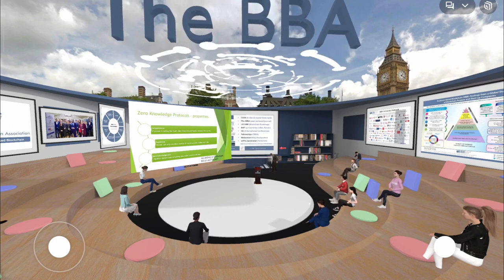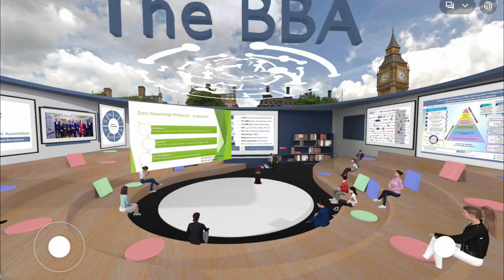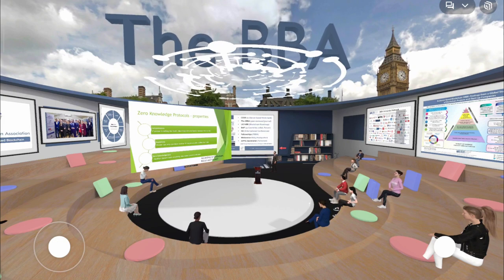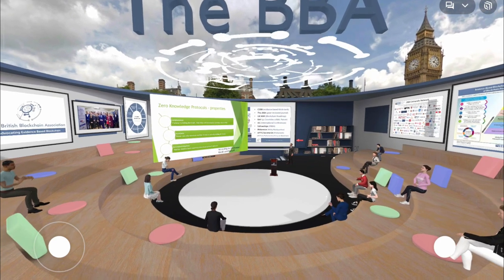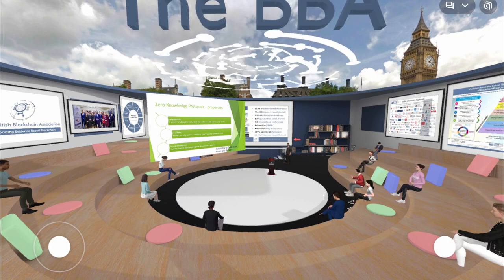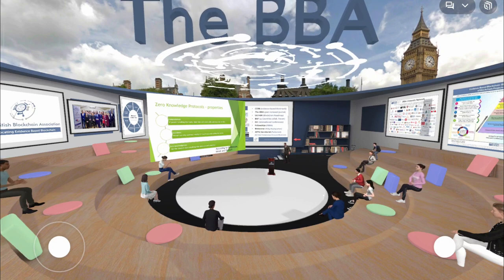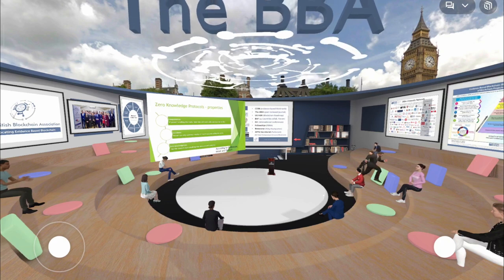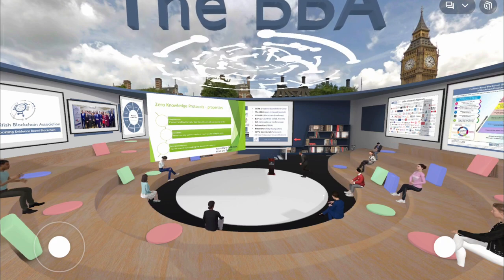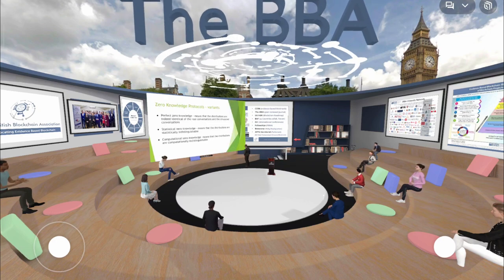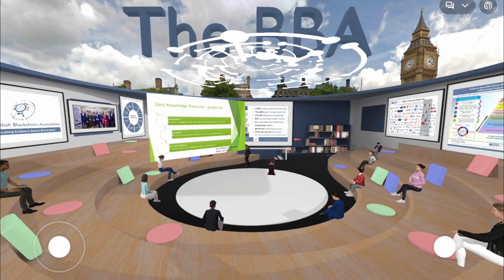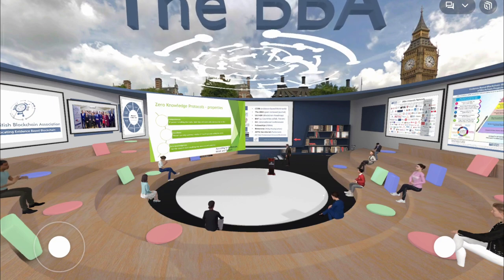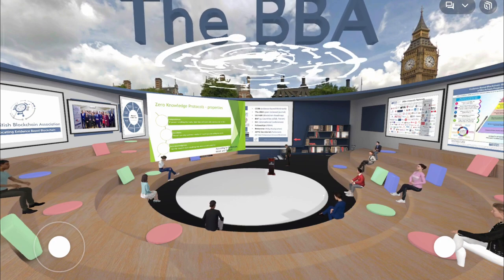The first property is completeness: if the prover is telling the truth, they will eventually convince the verifier. Imagine two people who share a bank account and some money is missing — if you are the prover and you tell the truth, you will convince the verifier. You run the protocol and, at the end, they will be convinced. This is a unique and powerful property.